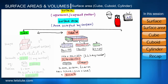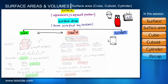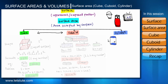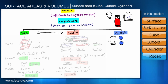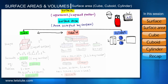Our third and last shape of this session is a right circular cylinder. A right circular cylinder has height H and radius R. The top and bottom surfaces are in the shape of a circle. If we remove the top and bottom surfaces, we get two circles of radius R and the remaining cylinder becomes an open pipe. If we cut this open cylinder and unroll it, we get a rectangle.